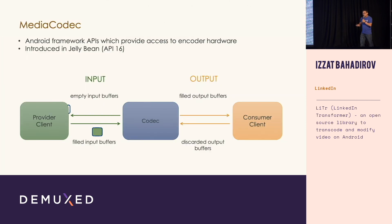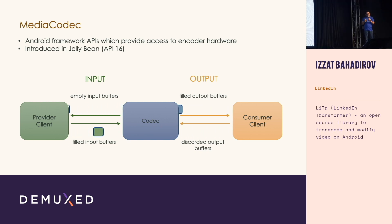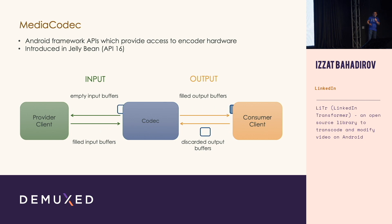To understand how to do transcoding on Android devices, we have to understand the core of it, which is the MediaCodec APIs. The device in your pocket oftentimes has to play fairly heavy content like 4K. Its CPU cannot handle it. That's why most devices come with actual fairly simple but still fairly powerful hardware that does that for you.